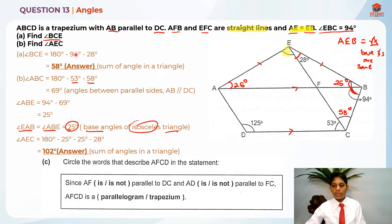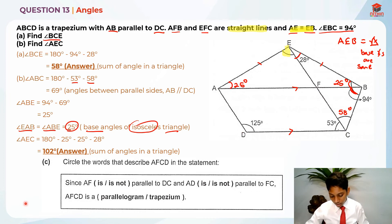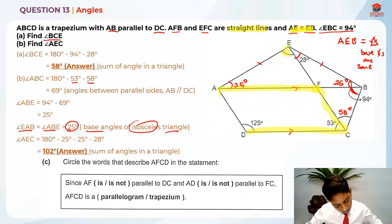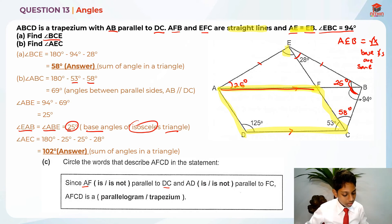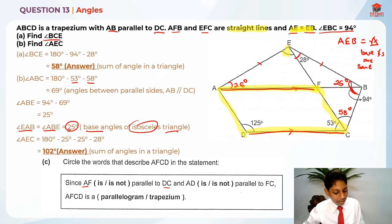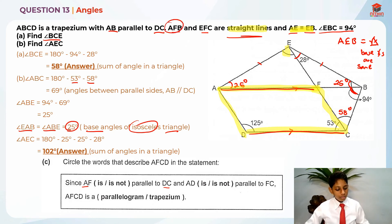Okay, I hope you understood part A and part B. Now let's move on to part C. We need to circle the words that describe quadrilateral AFCD. Let me highlight that part — AFCD. Since AF is part of the straight line AFB, and AB is already parallel to DC, AF is parallel to DC as well.